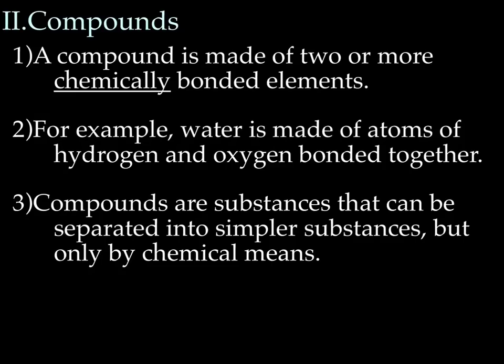A compound is made up of two or more chemically bonded elements. We're going to spend a whole unit talking about this, but what you need to know now is that they're hooked together chemically. For example, water — you guys probably know the chemical formula for water, so you already know some chemistry. The chemical formula for water is H2O, and it's made up of two hydrogen atoms and one oxygen atom, and they're hooked together. Compounds are substances that can be separated into simpler substances, but only by chemical means — you can't physically break them apart.